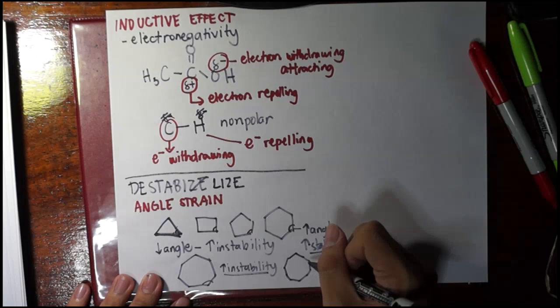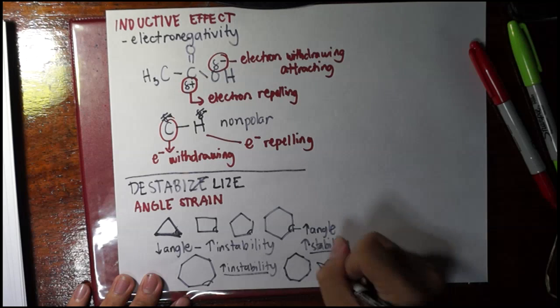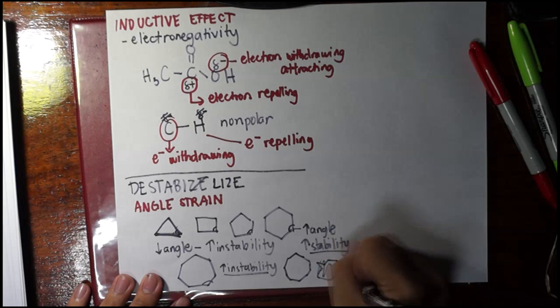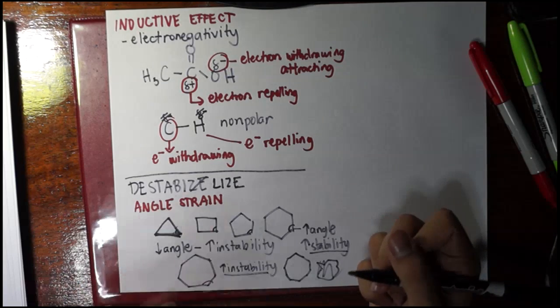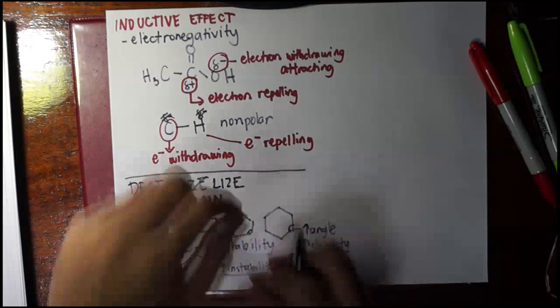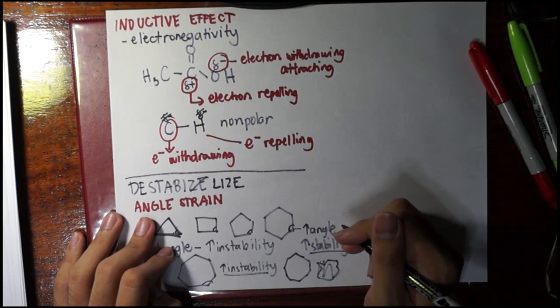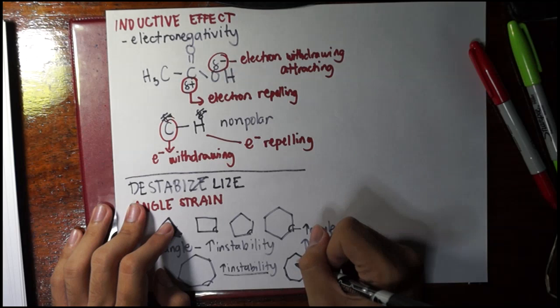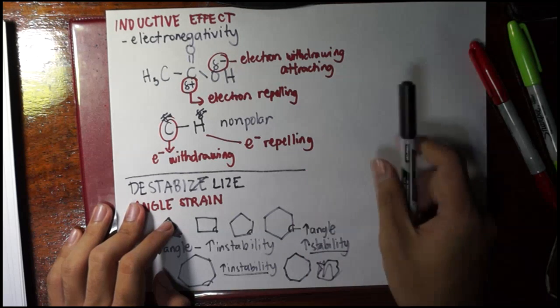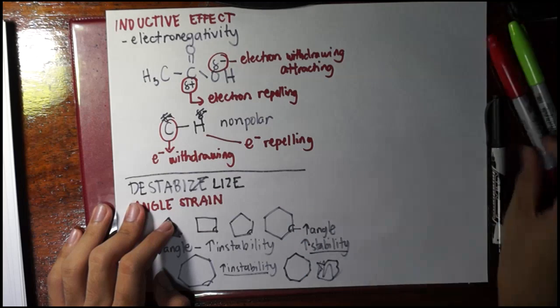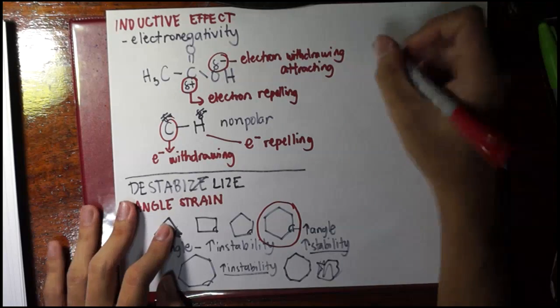Remember we have conformational isomerism. At one point they could form another kind of shape. The point is, the more carbons you have in the ring, the more types of conformations or shapes they could fold into, and that's what makes them stable. So you cannot really say that a 10-membered ring or nine-membered ring is very unstable, it's still stable. But still we conclude that cyclohexane is the most stable ring.